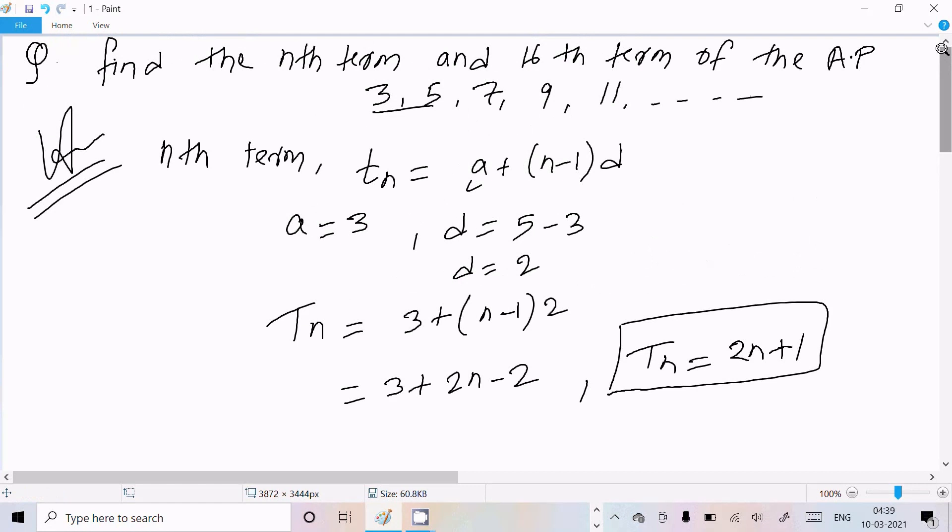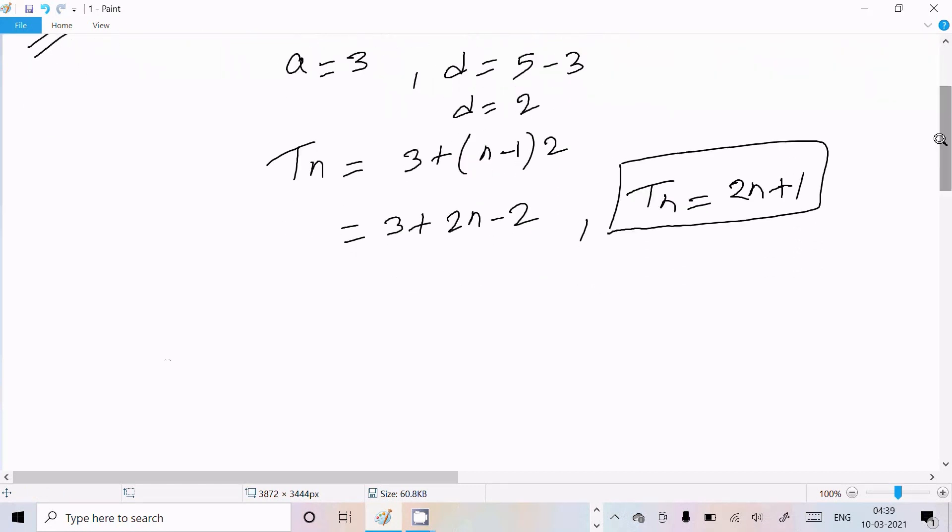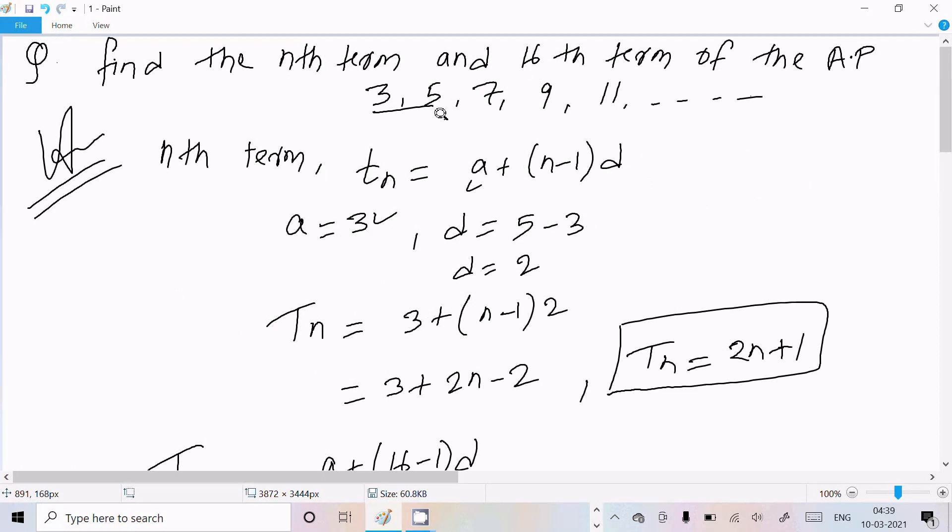Now calculate T16 term. So here a plus, in place of n, 16 minus 1 into d. So a is 3 and 16 minus 1, and the difference of this 2 numbers, 5 minus 3 or 7 minus 5 or 9 minus 7, is all 2.